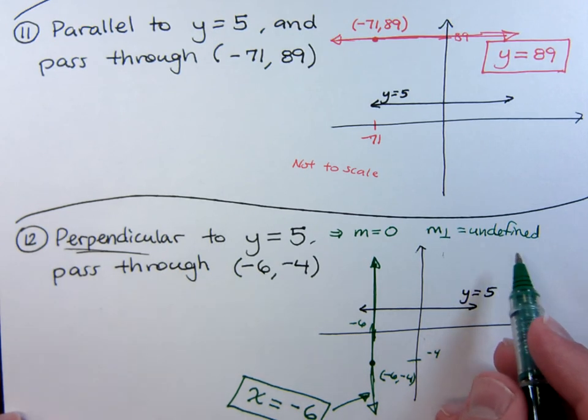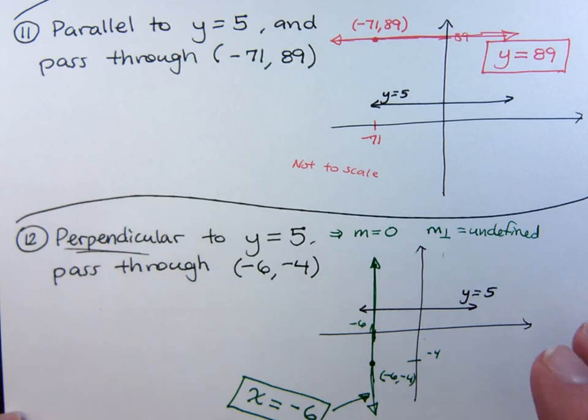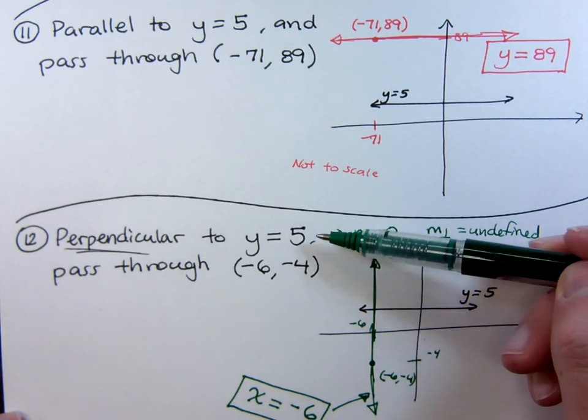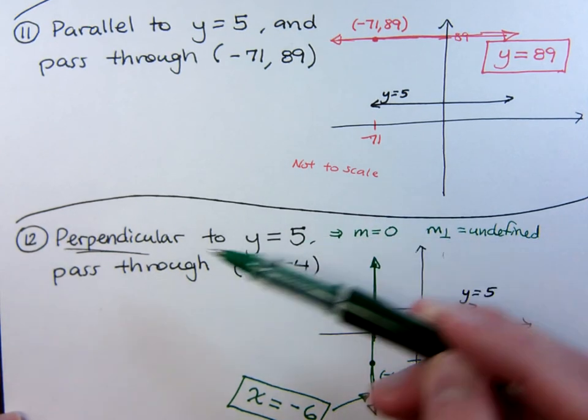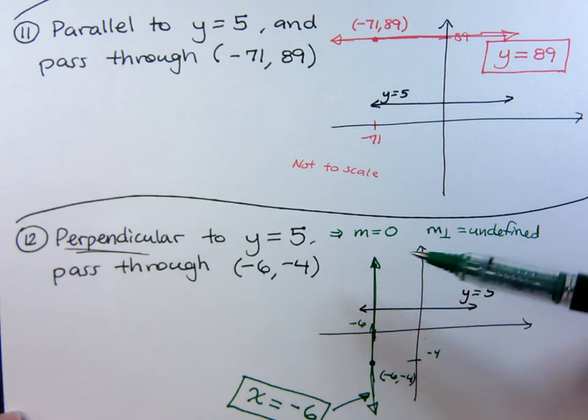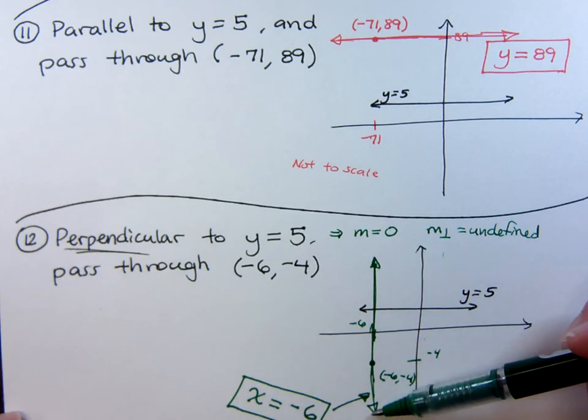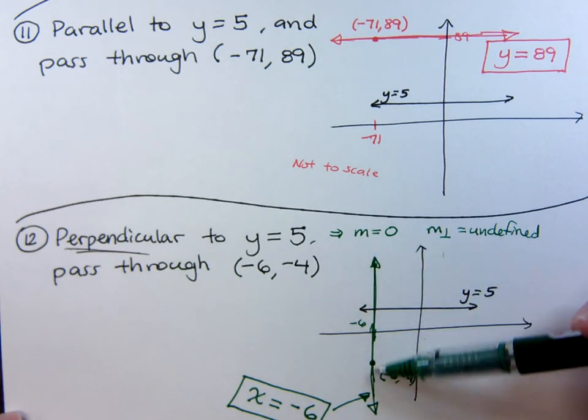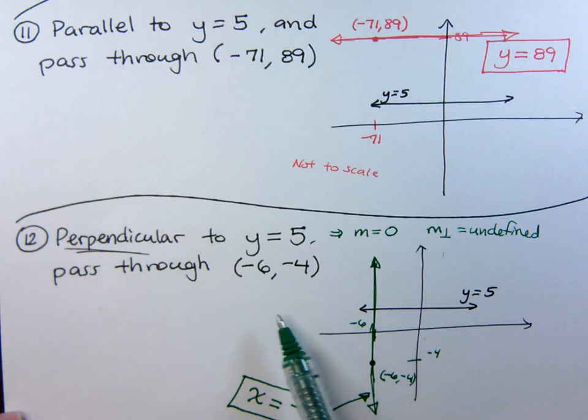So, think about it conceptually. Look at the graph. You are a horizontal line and you want to be perpendicular. So, that means you need a vertical line. If I had started with a vertical line, I wanted to be perpendicular. Then you would have a horizontal line.